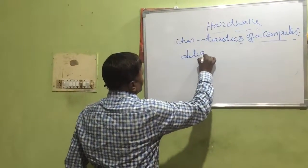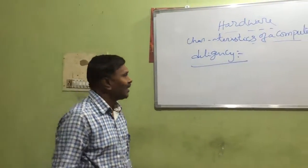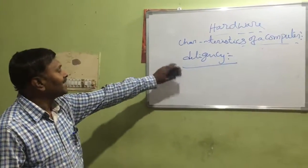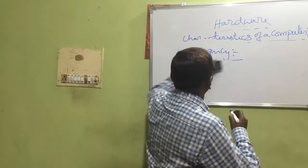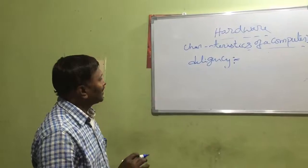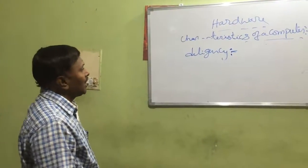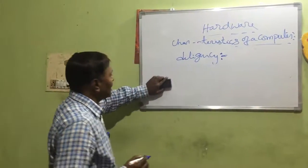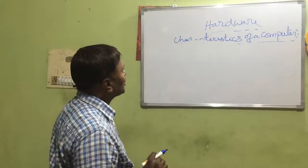Next is delicacy. A diligent person is someone who works continuously without taking any rest. In the same manner, the computer works continuously without taking any rest. It works depending upon the power and the data — it only needs power and data, nothing else. That is about delicacy.